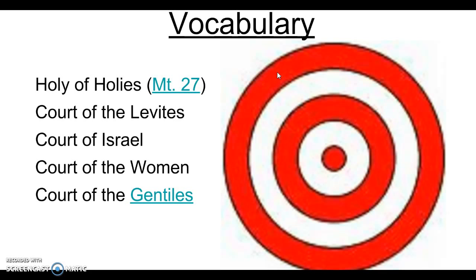The Holy of Holies was where the ark of the covenant would have been kept at the time that the Israelites had it. Even after the ark of the covenant disappears from the Bible, the Holy of Holies is still seen as the dwelling place of God — the holiest part of the temple. Only one person could go into the Holy of Holies, and that was the high priest, and only on one day of the year: Yom Kippur, the Day of Atonement, in which the priest would go into the presence of God and ask for forgiveness for the whole community.